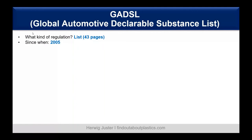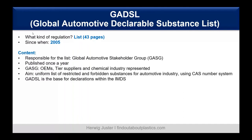The next one is the Global Automotive Declarable Substance List, or GADSL — a list of around 40 pages brought to market in 2005. The Global Automotive Stakeholder Group, which includes OEMs, tier suppliers, and the chemical industry, is responsible for the list and publishes it once a year. The major aim is to have a uniform list of restricted and forbidden substances for the automotive industry, using the CAS number system. The GADSL is also the base for declarations within the IMDS.